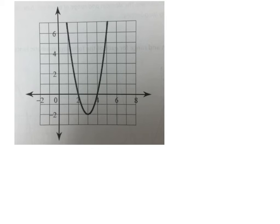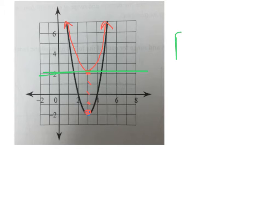Numbers 5 and 6 on your review are about the graph on screen. Question 5 asks for the range of the quadratic function if it is translated up 4 units. To translate up, grab the vertex and move it up 1, 2, 3, 4 units. So here's the new vertex, and the parabola now opens from there. The lowest y-value is 2, so the range for number 5 is y greater than or equal to 2.